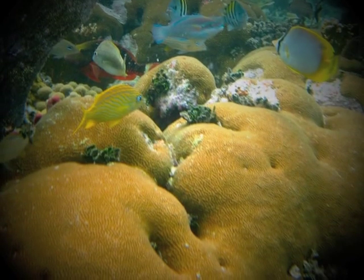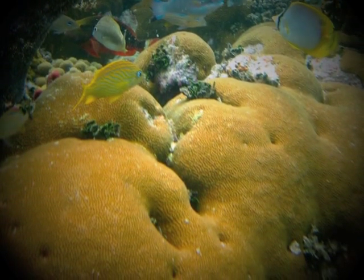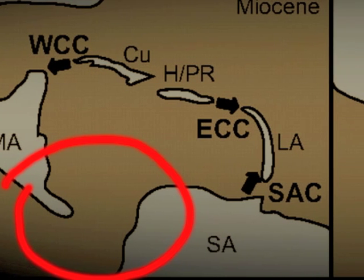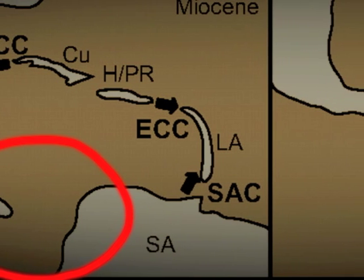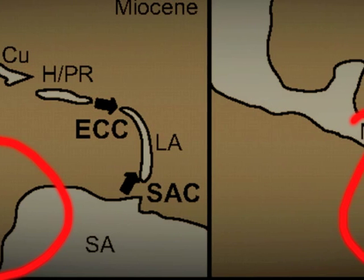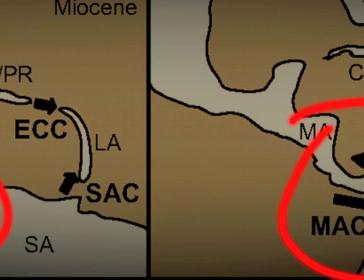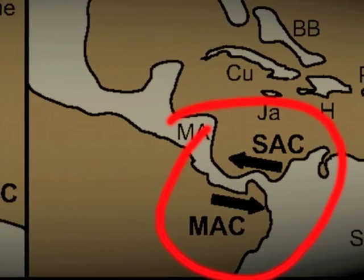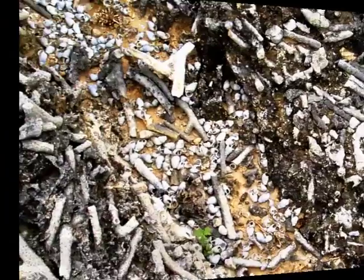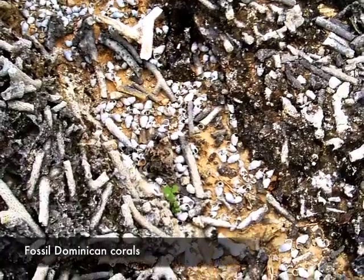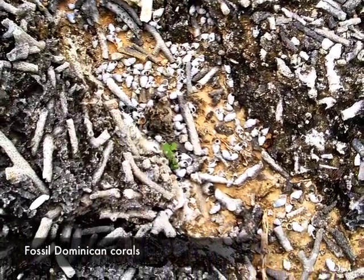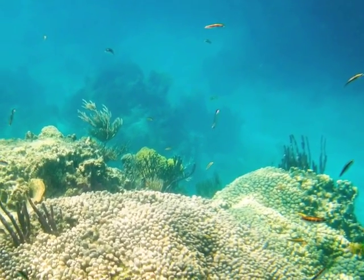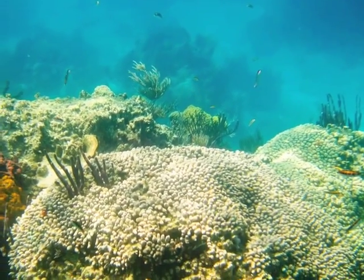This extinction event is thought to be associated with changing environmental conditions that coincided with the formation of the Isthmus of Panama, which separated the Atlantic and Pacific Oceans, as well as the onset of glaciation in the Northern Hemisphere. By understanding how fossil reefs responded to this past environmental crisis, scientists hope to better understand how reefs might be affected by future climatic and environmental changes.